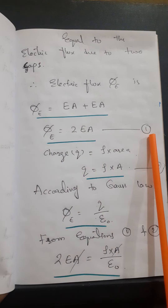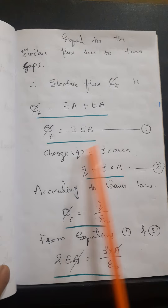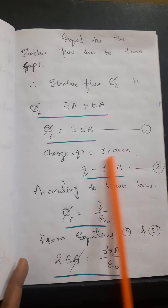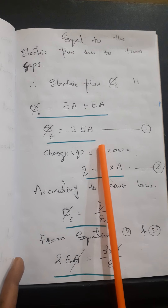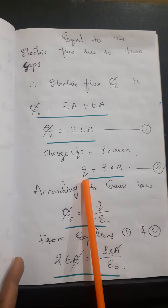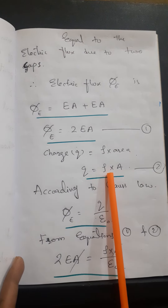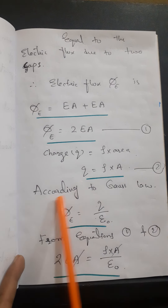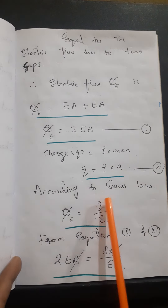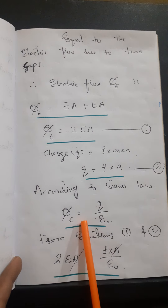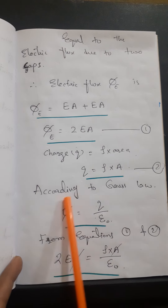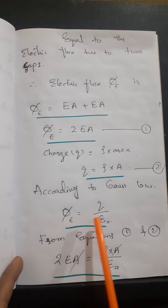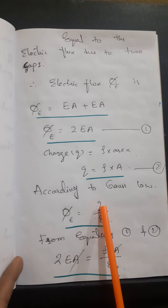The total electric flux from both caps is 2EA. Let us call this Equation 1. We know that charge Q equals rho times area, so Q = ρA. Let us call this Equation 2. Now we apply Gauss's Law: φE = Q / ε₀.